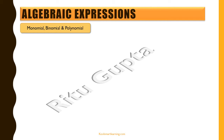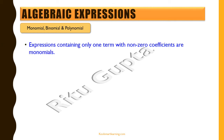Now let's understand monomials, binomials and polynomials. Expressions containing only one term with a non-zero coefficient are called monomials. This is important: the expression should have only one term and that term should have a non-zero coefficient. So an expression like 0x would not be a monomial because the only term has a zero coefficient. Examples of monomials are 5x², 9y³, 3z, and 4 — even 4 is a monomial because it is one term with a non-zero coefficient, even though it has no variable.